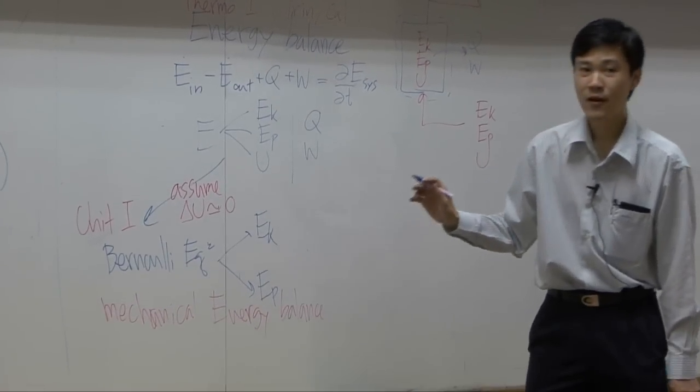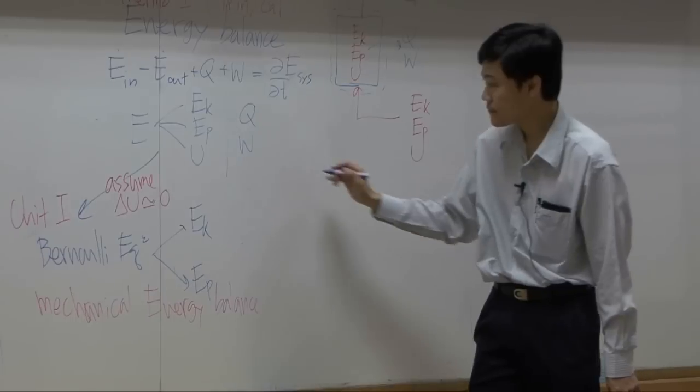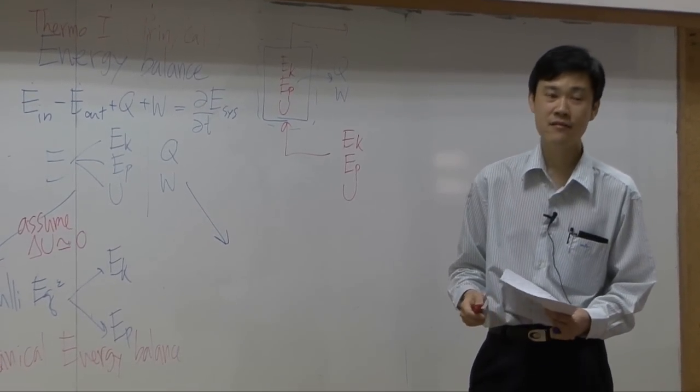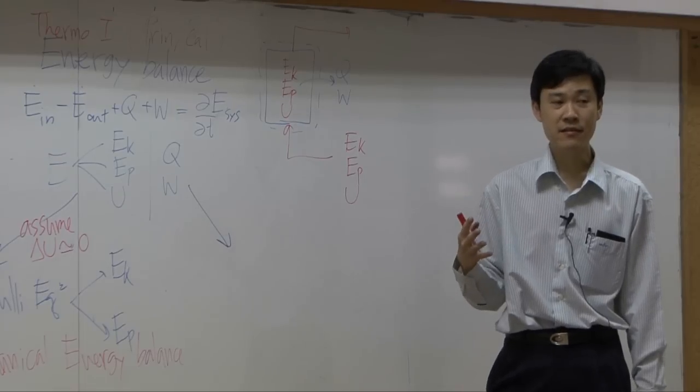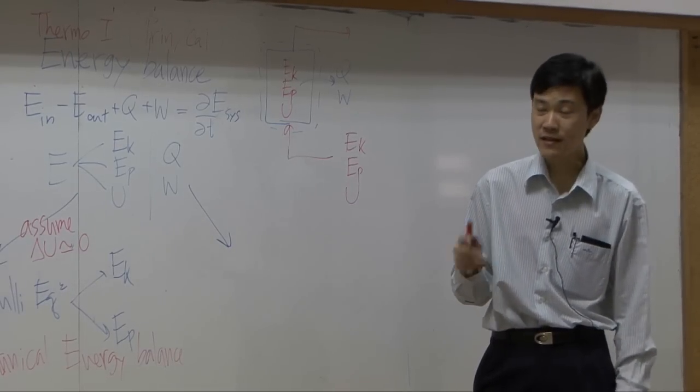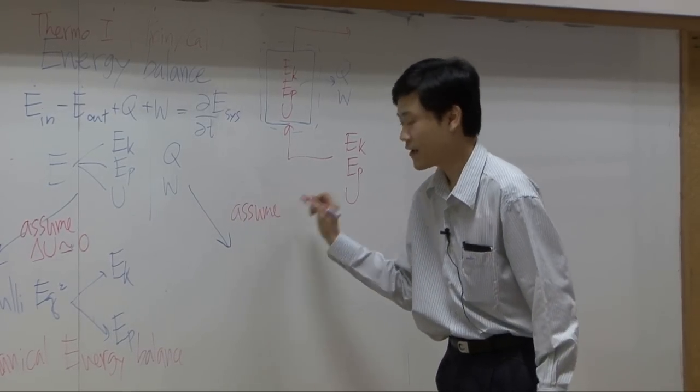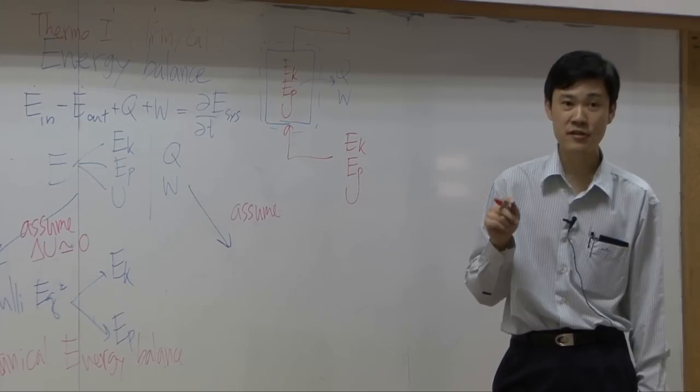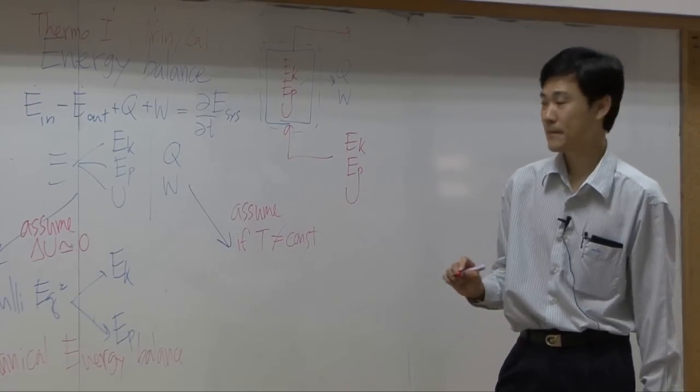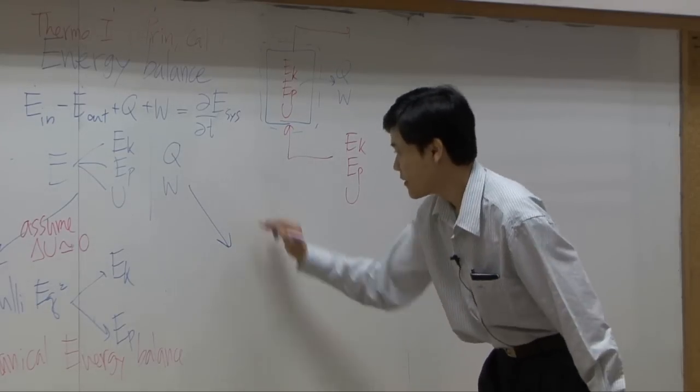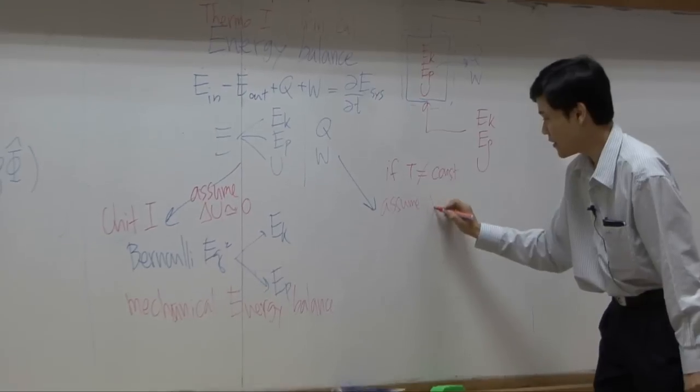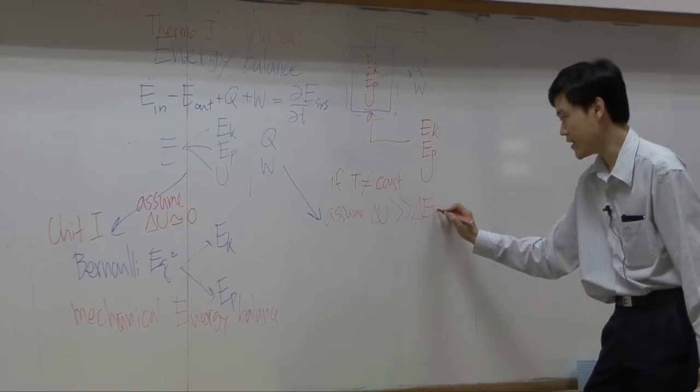Then on the other hand, when you calculate or try to do energy balance in the system that has temperature change, once again from thermodynamics, mostly we can assume that as long as you have temperature change in your system, if T is not constant, you can assume that delta U is much, much greater than delta EK and delta EP.